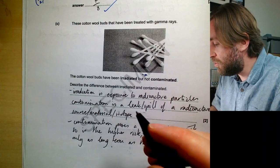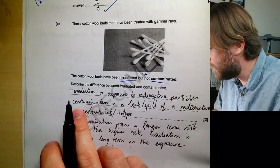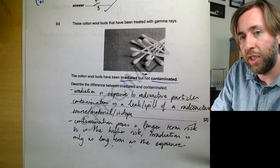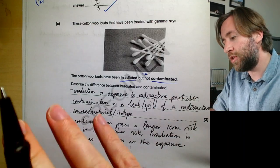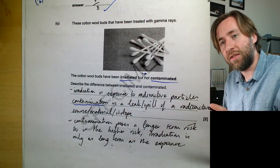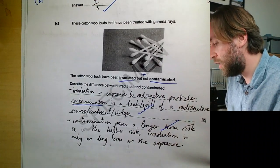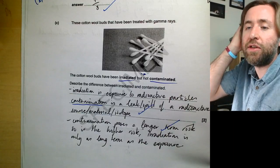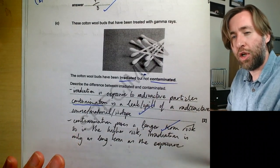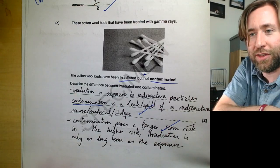Describe the difference between irradiation and contamination. Irradiation is exposure to radioactive particles — alpha, beta, or gamma hitting something — and it's relatively low risk because it's only temporary; the risk lasts only as long as the exposure. Contamination is a leak or spill of a radioactive source or material getting into somewhere it shouldn't be. Contamination poses a longer-term risk and is therefore higher risk. If you state that contamination is a longer risk, that implies irradiation is shorter.